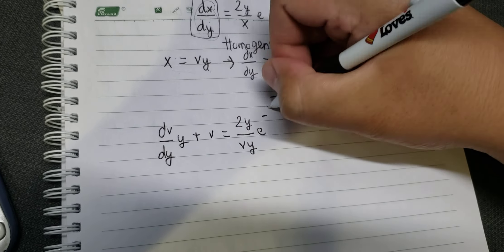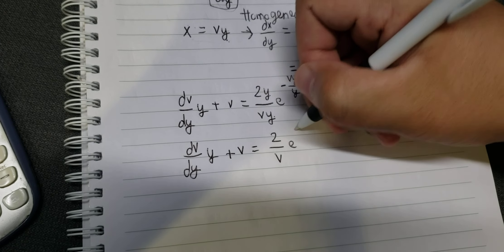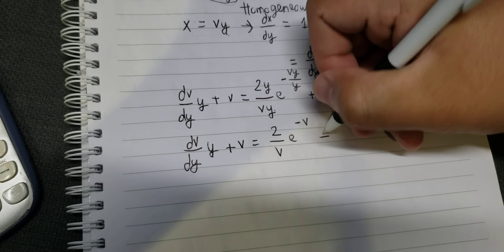y divided by y gives us 1, similar for this term. We simplify y, and we can see that v and v cancel also.